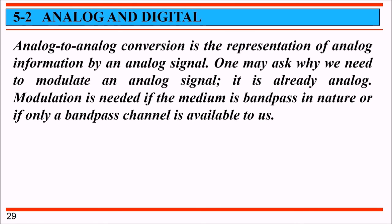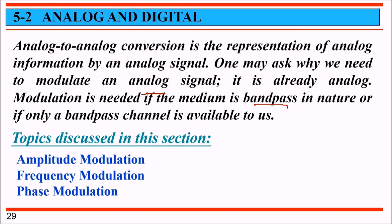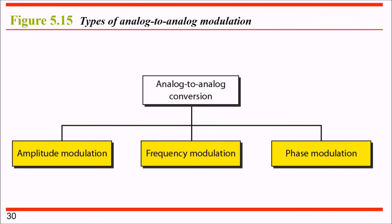Now we look at analog to analog conversion, which is the representation of analog information by an analog signal. One may ask why we need to modulate an already-analog signal. Modulation is needed when the medium is bandpass in nature, or when only a bandpass channel is available. For analog to analog conversion, we use amplitude modulation (AM), frequency modulation (FM), and phase modulation (PM).